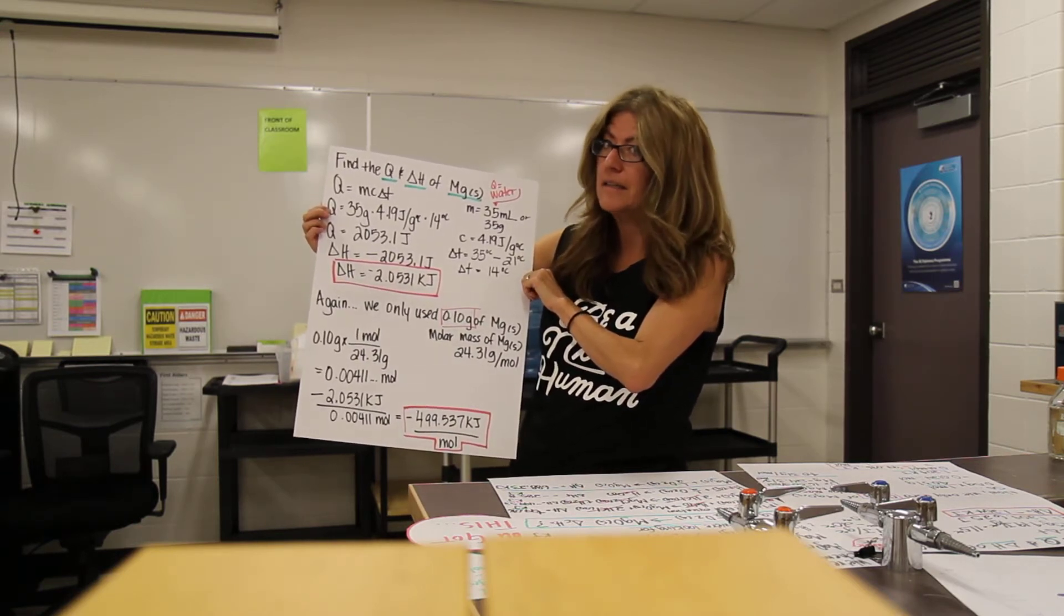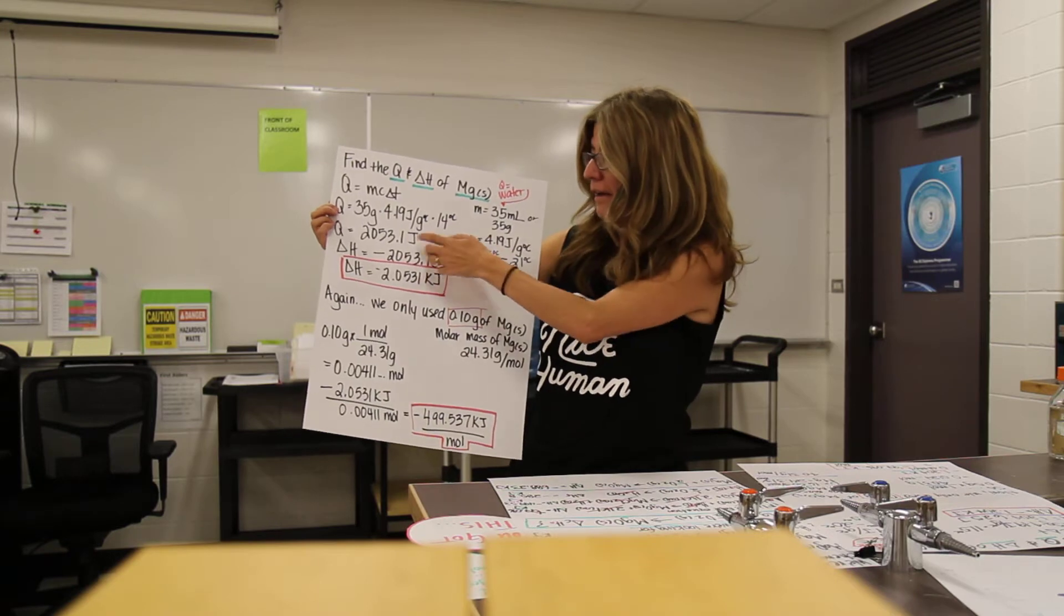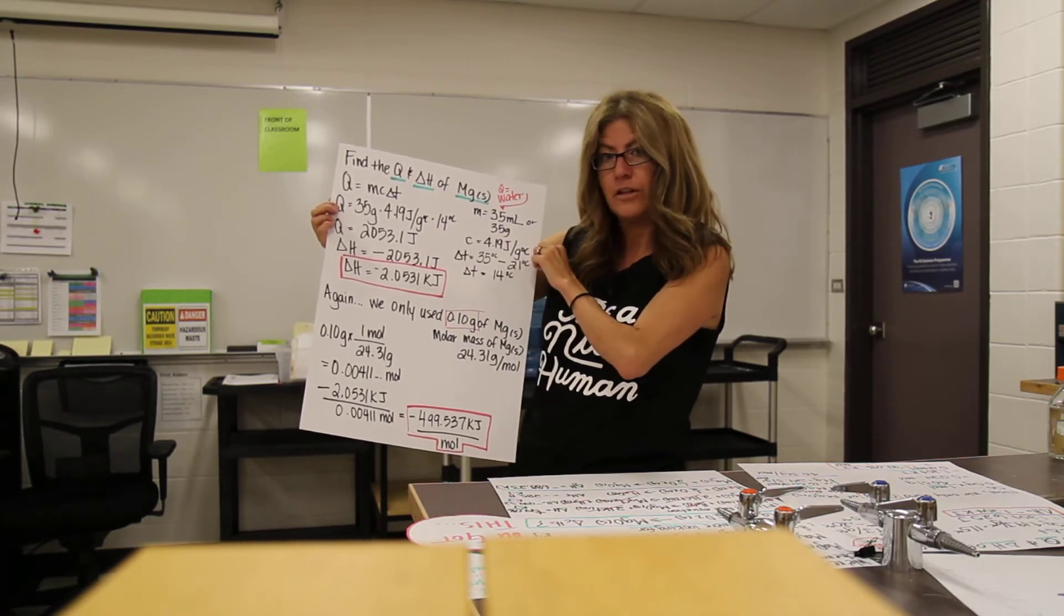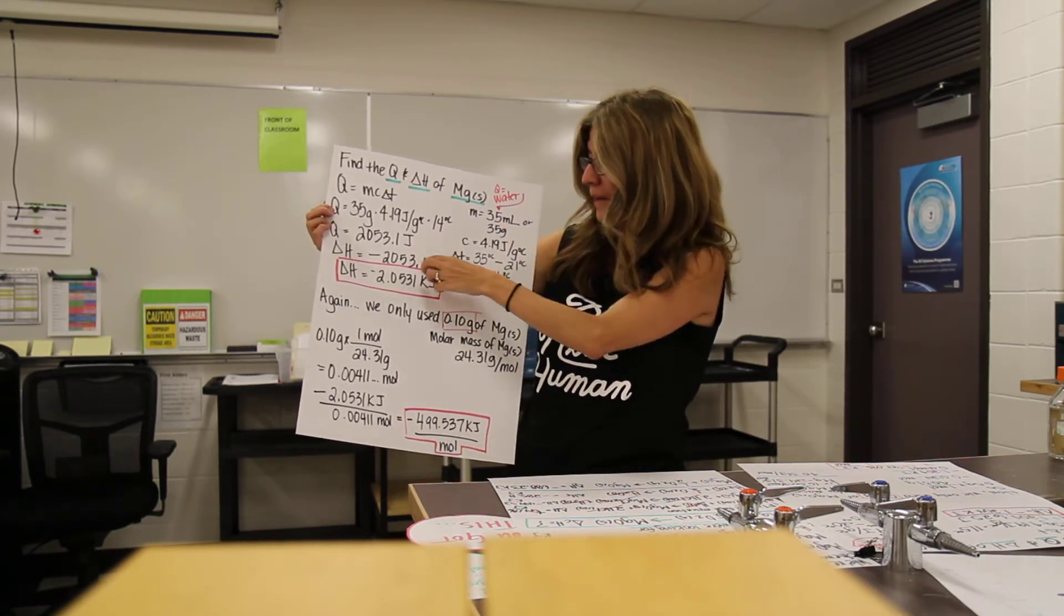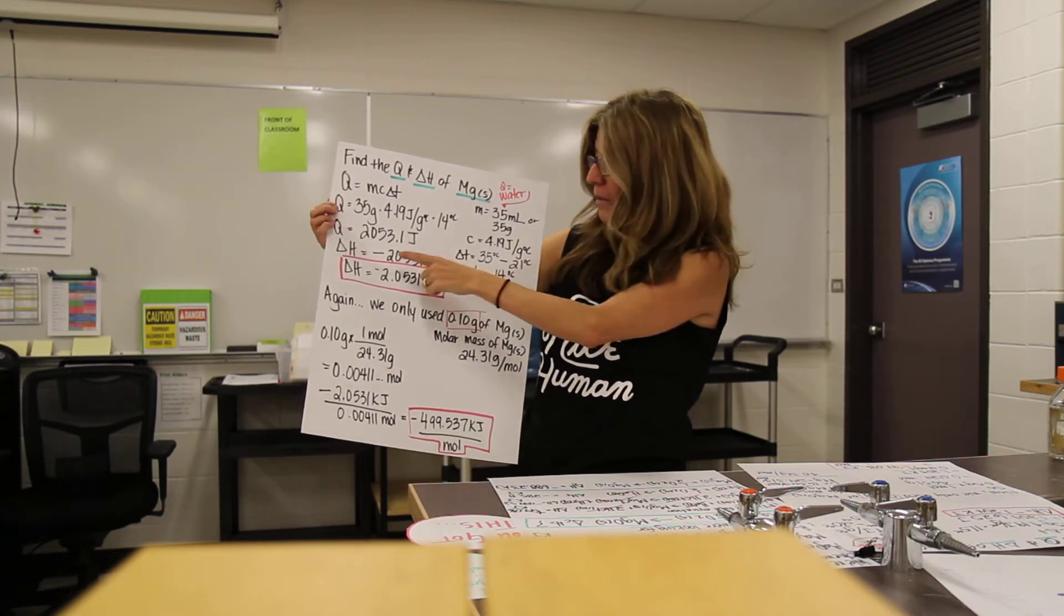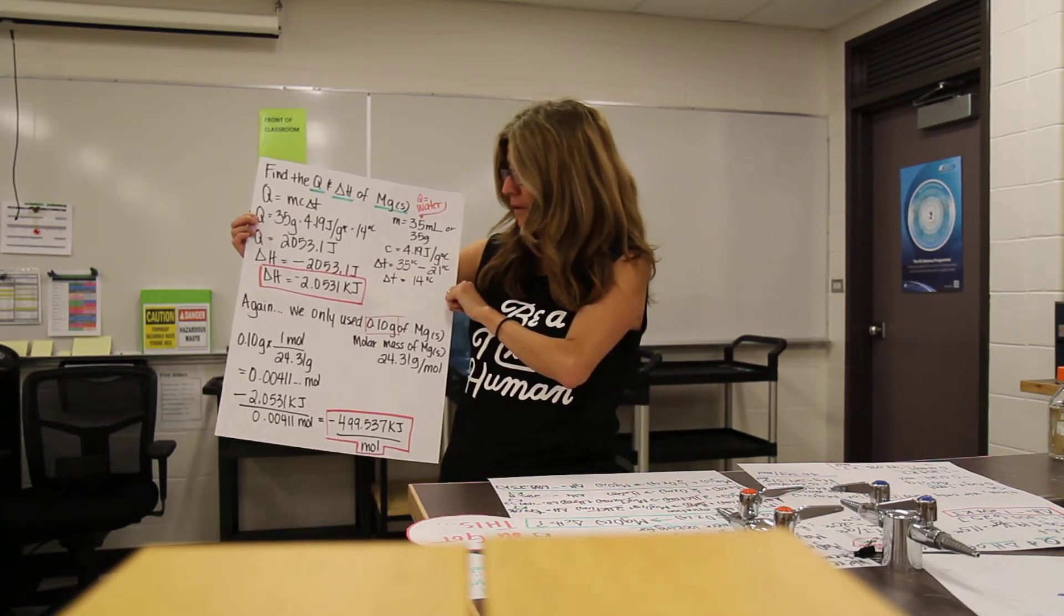Now the delta H, remember, is opposite, same number but opposite sign, because here, kinetic energy, right? The temperature went up, but the delta H is potential energy, so we have negative 2,053.1 joules.